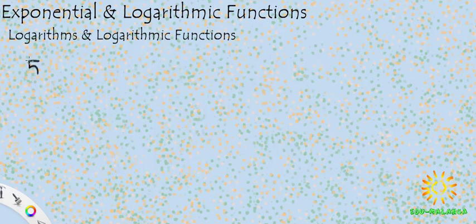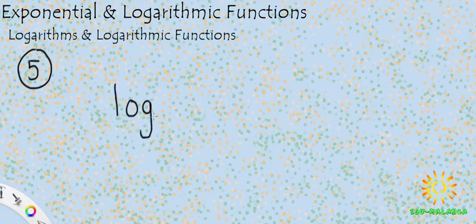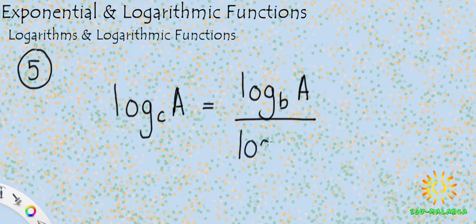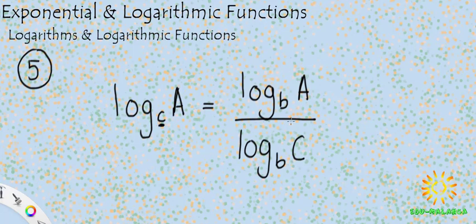The last law we'll look at is not associated with a law of exponents — it's the change of base law. If you have log base c of a, you can change the base and still solve the expression using a new base b. The formula is: log base c of a equals log base b of a divided by log base b of c. So you change the base throughout, placing the original base c as the argument of the denominator log.